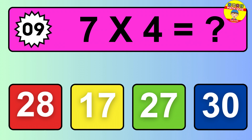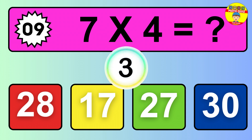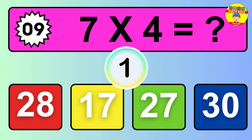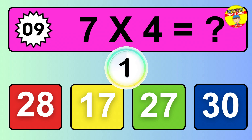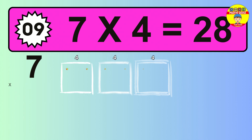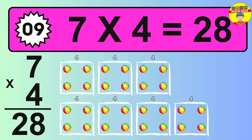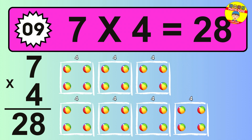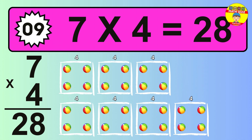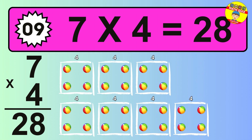Question 9. 7 times 4 equals what? The answer is 7 times 4 is 28. To calculate, we have 7 groups with 4 balls each one. So, how many balls do we have? 28 balls.